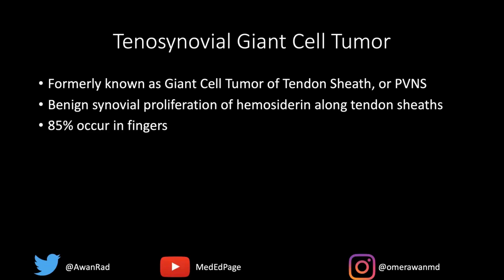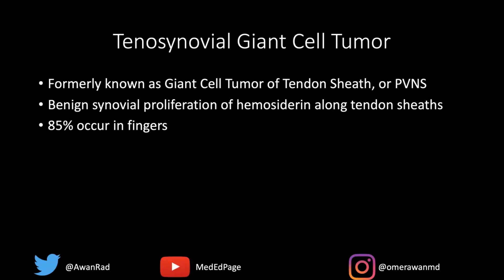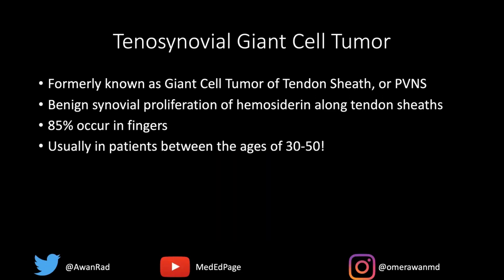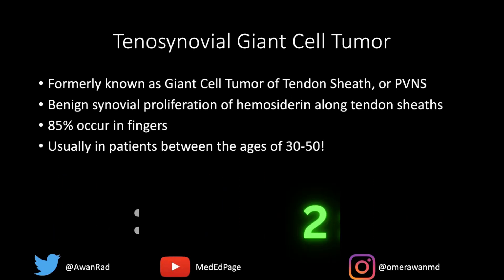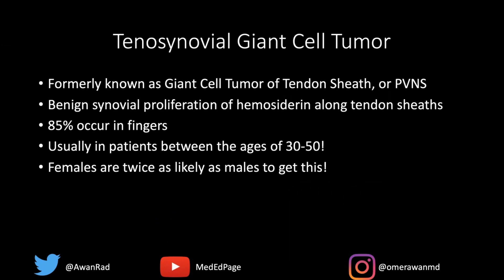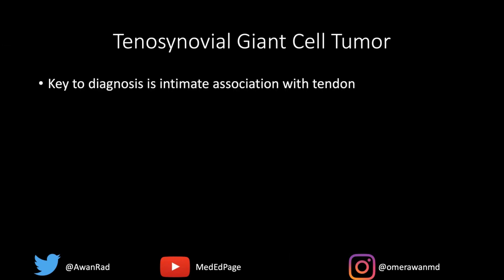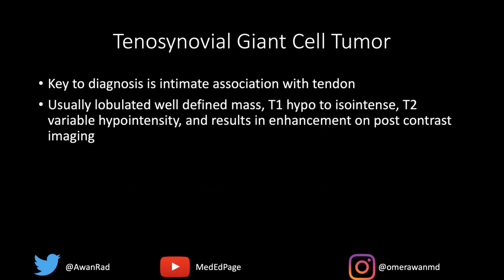This most commonly occurs in the fingers — 85% of cases — but as in this index case, it occurred in the toe. It is usually seen in middle-aged individuals between 30 and 50 years old, and females are two times as likely to get tenosynovial giant cell tumor than males. The key is identifying the intimate association between the lesion and the tendon or tendon sheath.